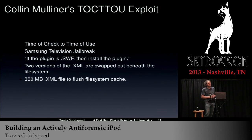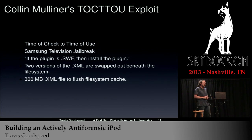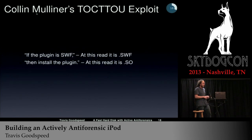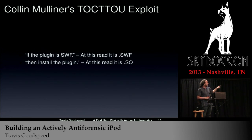He needed the 300-megabyte XML file because operating systems like to cache disk accesses. If the access is cached, the operating system will only read it once even though told to read it twice, and the disk doesn't have a choice in the matter. So again, he exploited the shell script: it said if the plug-in is .swf install it — and at that point it was — so install the plug-in. Then he gave it the .so, and that's how he exploited the TV.